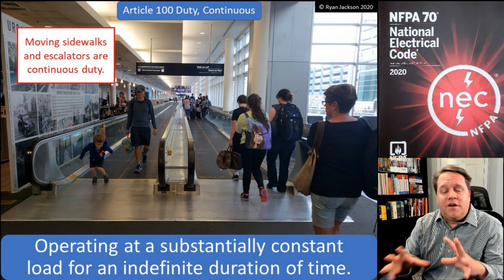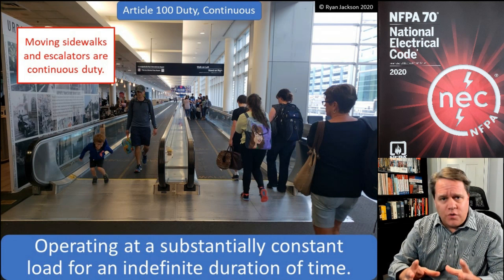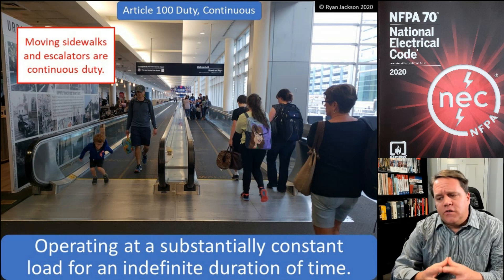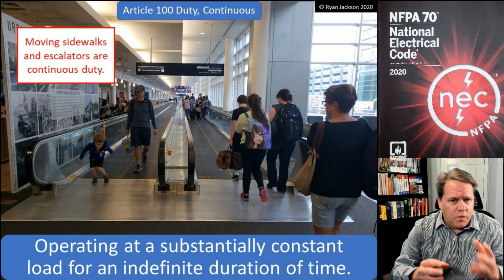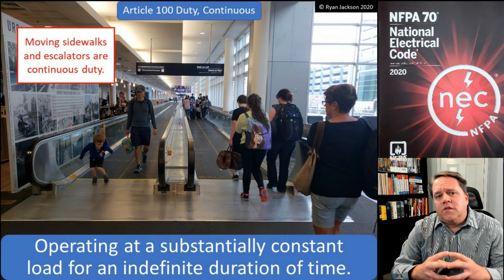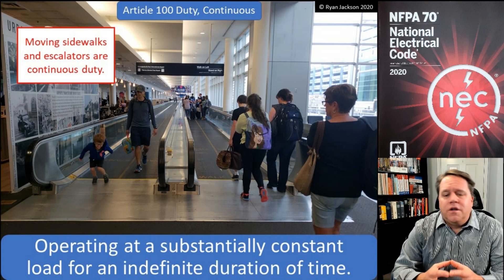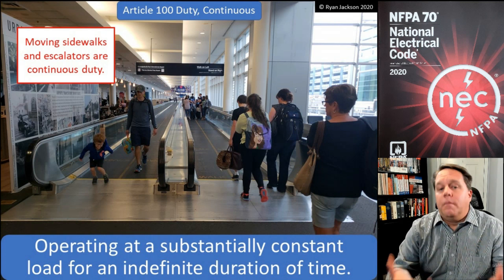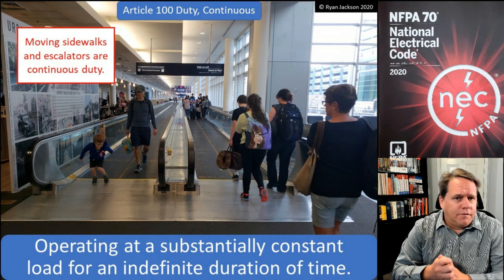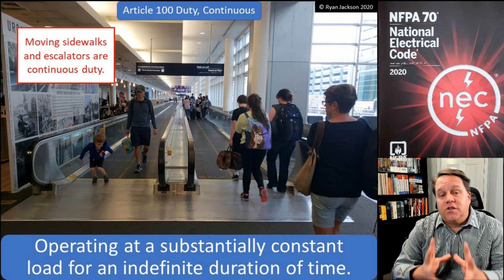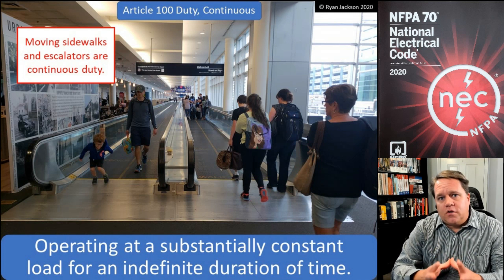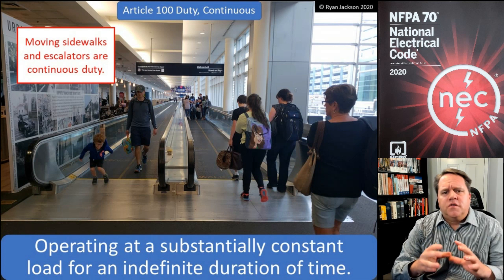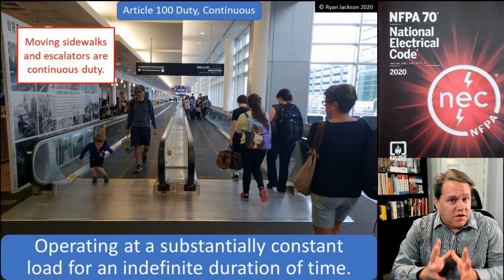We've had some easy ones — now it's time for a couple of tough ones. This is duty and its associated terms: continuous duty, intermittent duty, and things of that nature. These definitions all relate to motors. When you read the term continuous duty, it says it's something that operates at a substantially constant load for an indefinite duration of time. If you go to section 430.22(e), which covers conductor sizing, you'll see that you size conductors for motors based on the type of duty cycle they have.